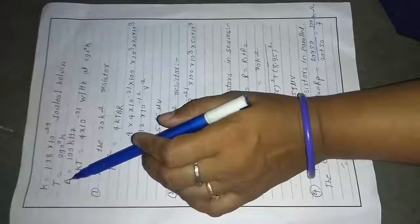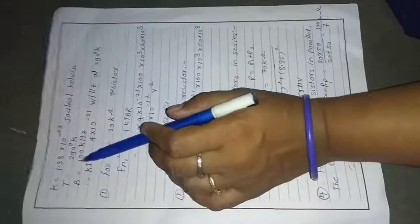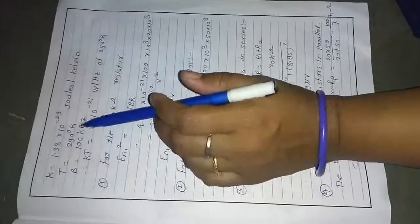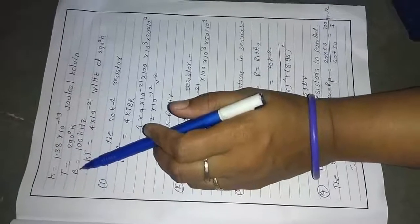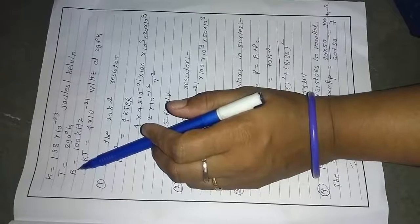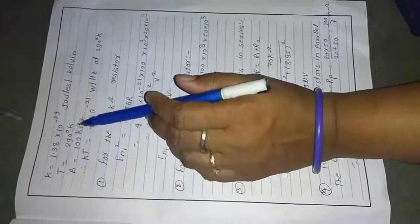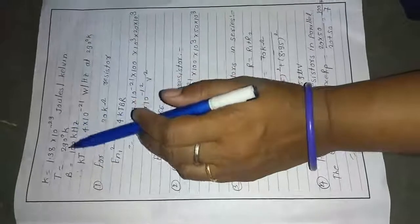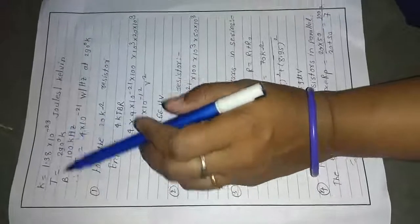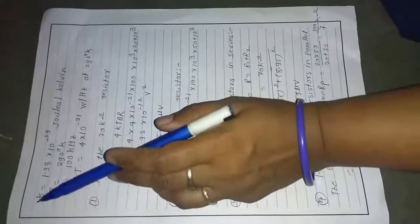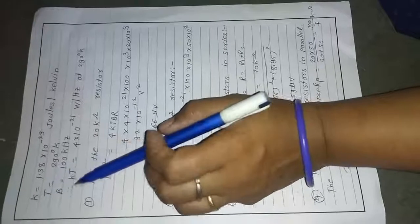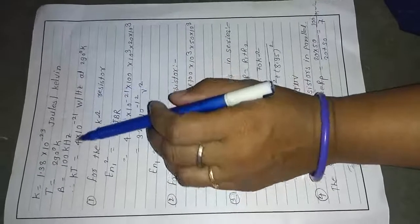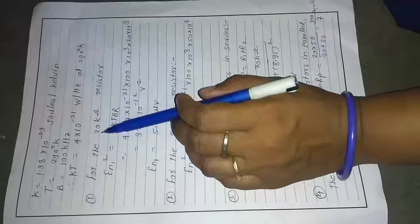The bandwidth is given as 100 kHz and must be converted to Hertz by multiplying by 10³. The temperature is already in Kelvin (290 K), so no conversion is needed. If the temperature were given in degrees Celsius, it would need to be converted to Kelvin first.